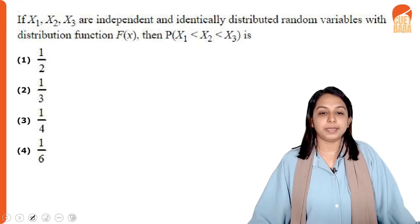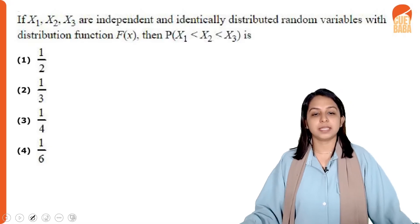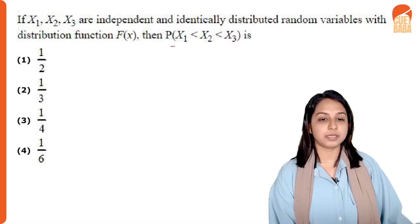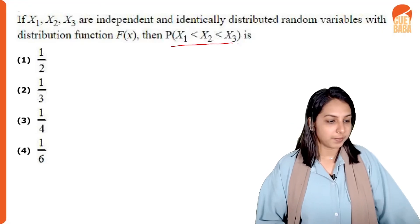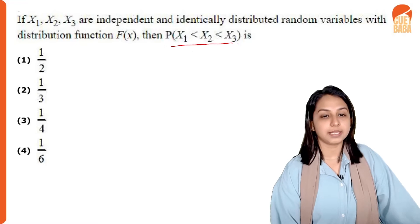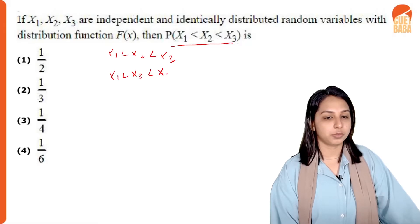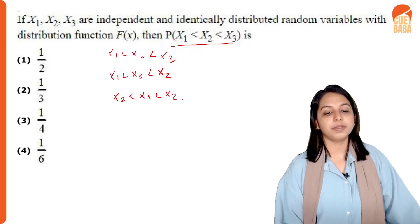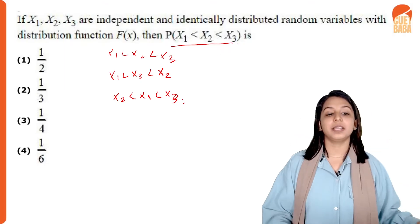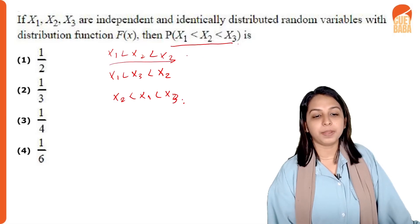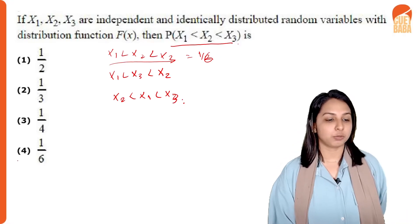If x1, x2, and x3 are independent and identically distributed random variables with distribution function F(x), then what is the probability of x1 < x2 < x3? Since there are three iid random variables with the same distribution, this ordering can occur in six different ways — x1 < x2 < x3, x1 < x3 < x2, x2 < x1 < x3, etc. Since these six events are equally likely, the probability of x1 < x2 < x3 equals 1/6. Option 4 is the right answer.